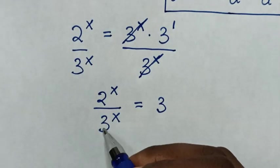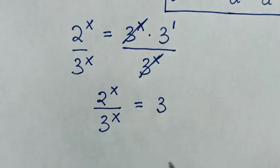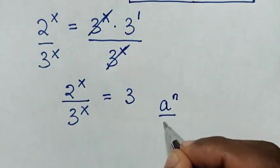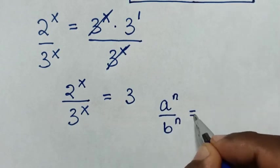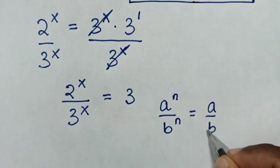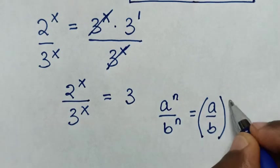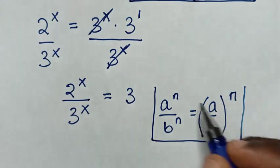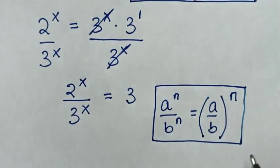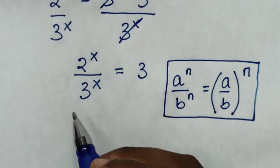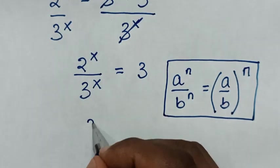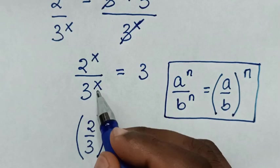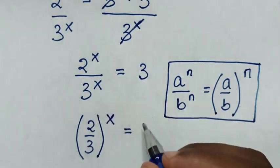Now here we have division of exponents with the same power of x. So we'll apply the rule: a power of n over b power of n is equal to a over b, bracket to the common power of n. Then our equation becomes 2 over 3, bracket to the common power of x, is equal to 3.